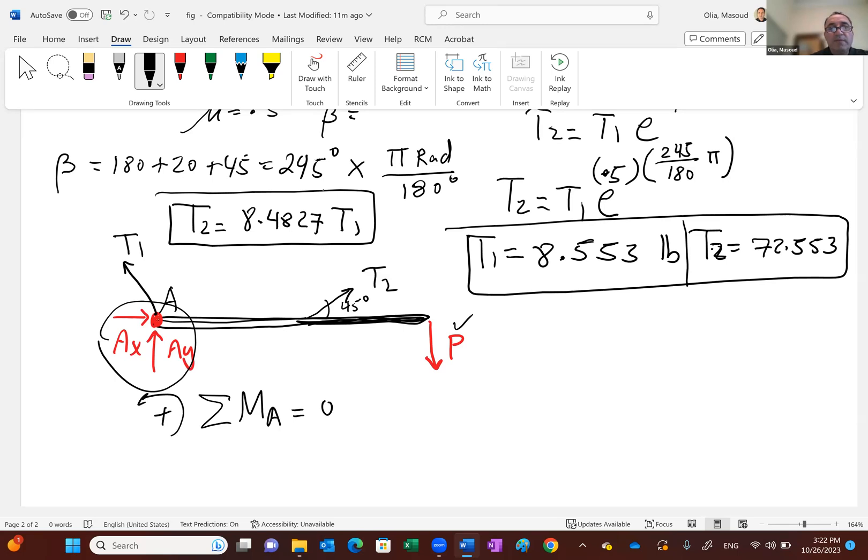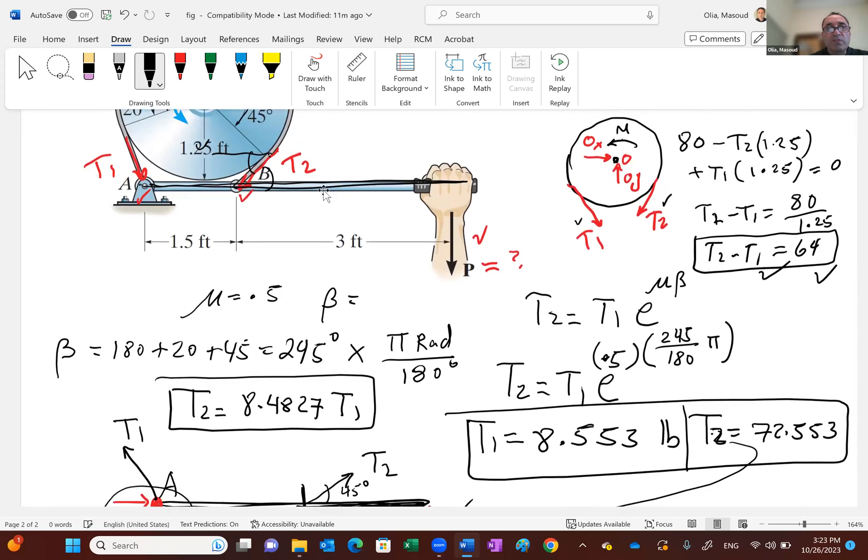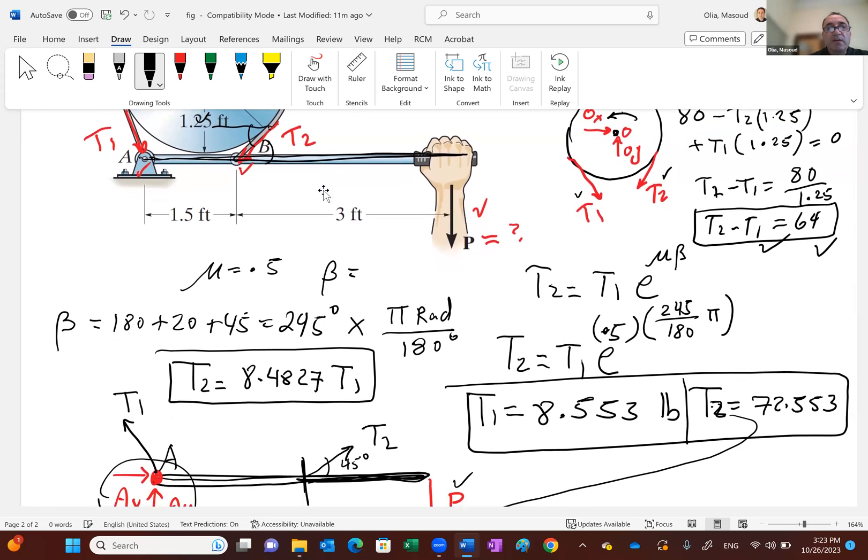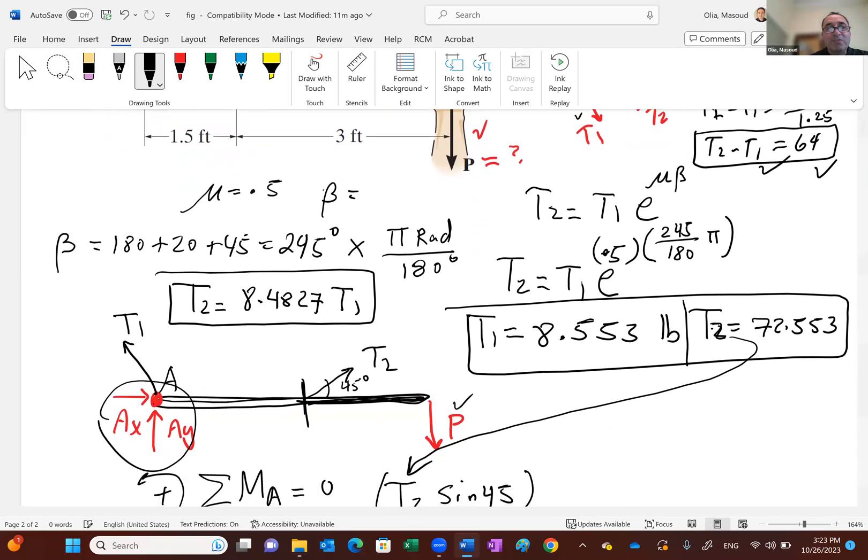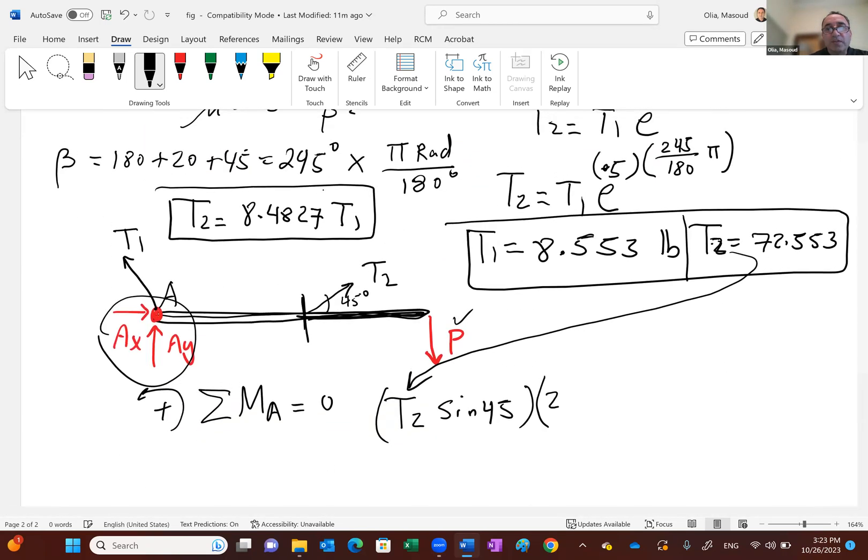So what do we have? We have T2 sine 45. Remember T2, you already know, is 72.553. Times what distance? This distance. Let's see, what is that? That's two. I didn't do a good job, by the way, in terms of dimension, but that's two feet in the picture. And that's going positive.